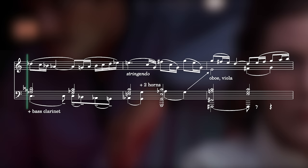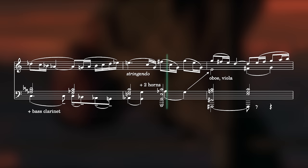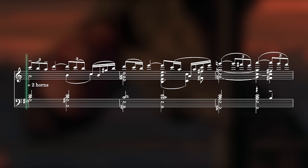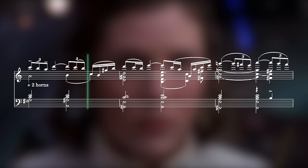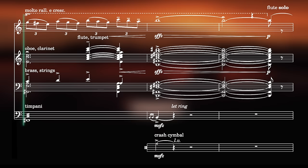They move from the flattened supertonic F major to a G flat major based tonality, to C major with a sharpened 4th, then into 5 bars of harmony based around the supertonic half diminished 7th, leading us, eventually, to the dominant, B major.